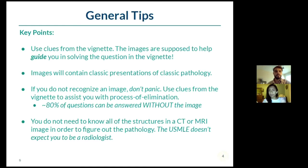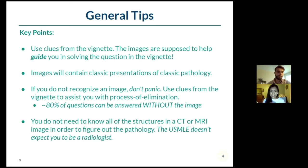It's very important to guide your thinking by looking at that history, especially reading these images in the 60 seconds you have on these questions. And these images are not going to have very subtle findings. If you're going to see a pneumothorax, it's going to be a huge pneumothorax - not a tiny little apical pneumothorax. So don't spend time on the nitty gritty. Look at the general gestalt. If you don't recognize something, don't panic - history, history, history.